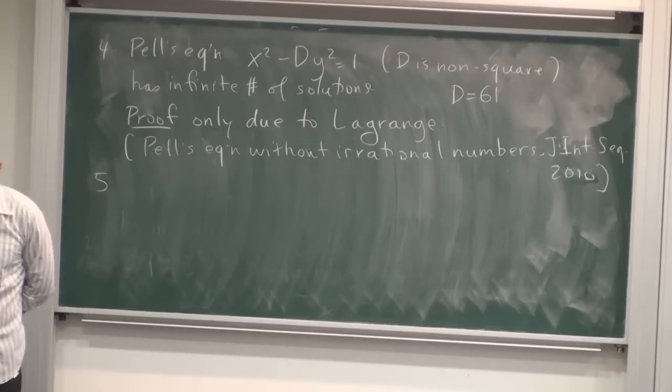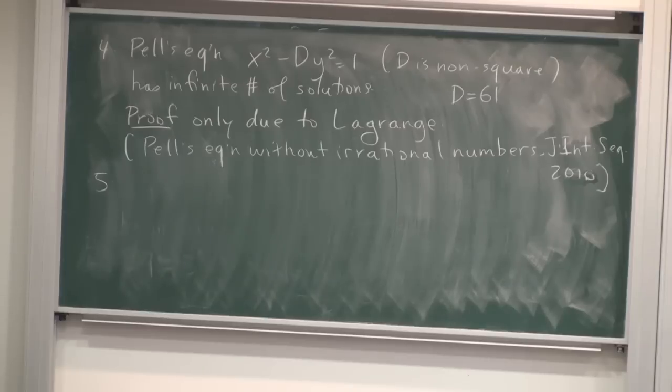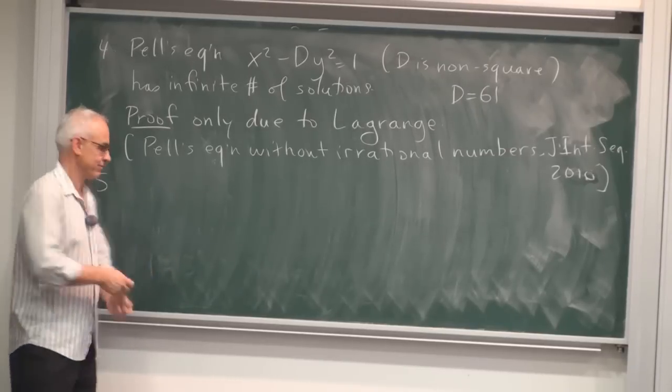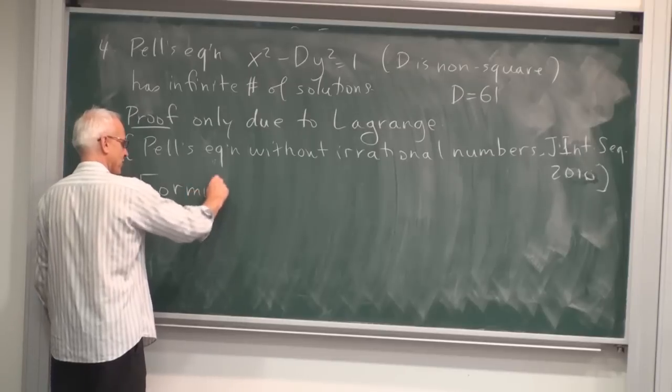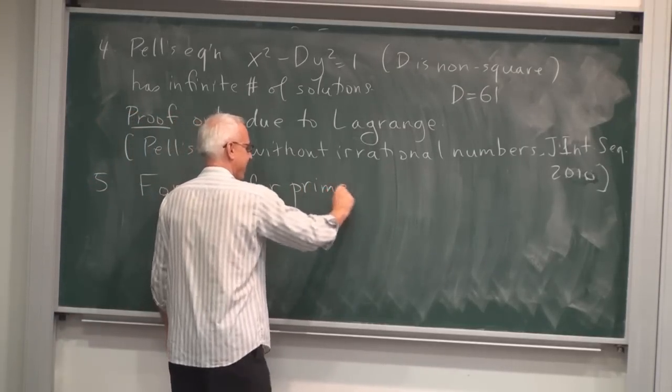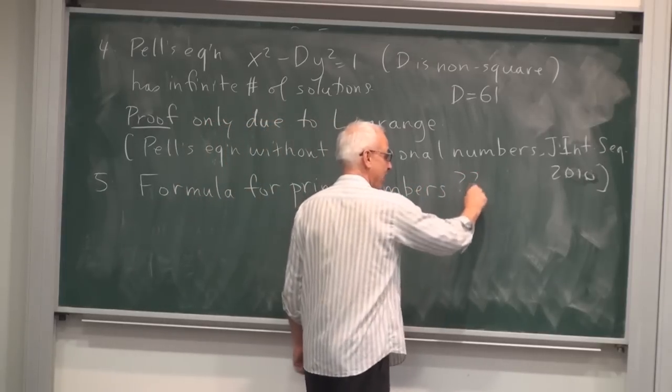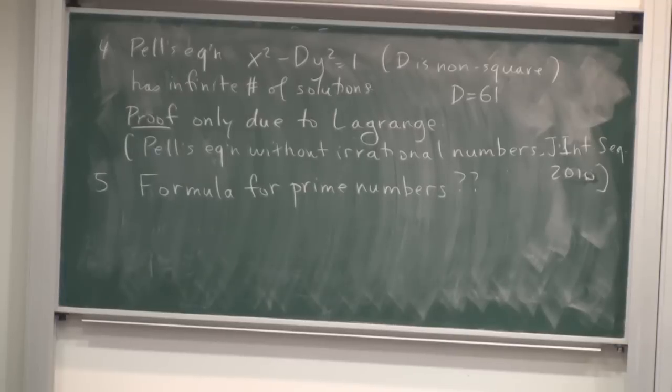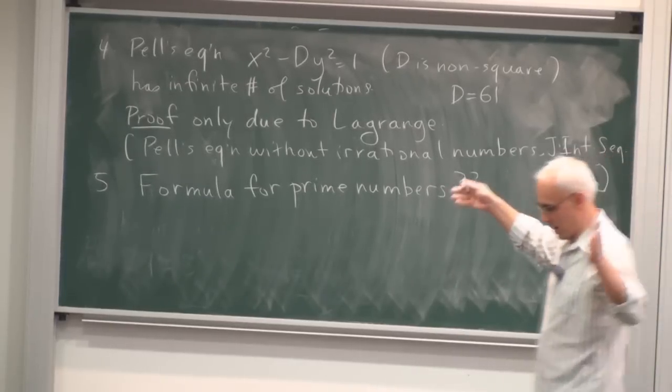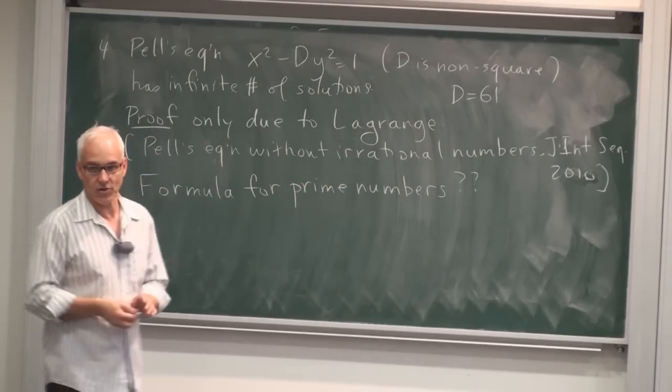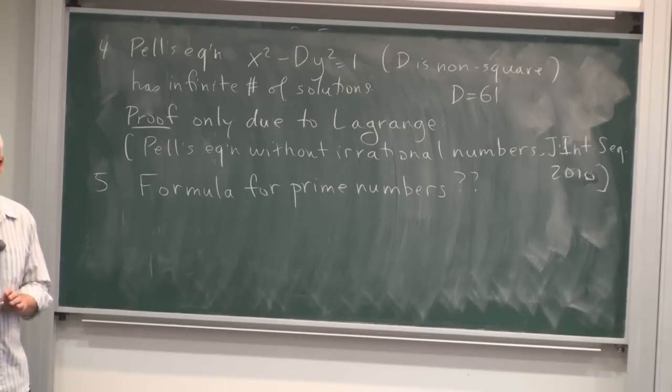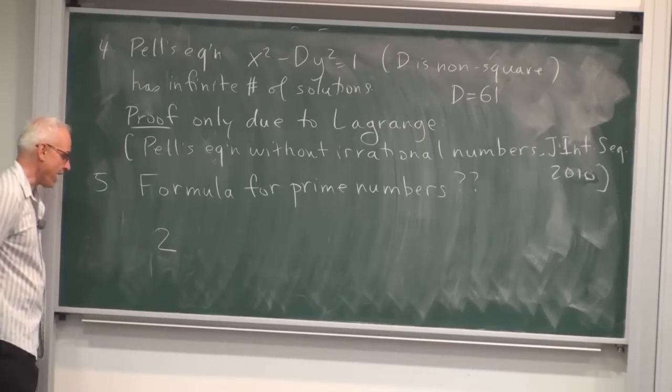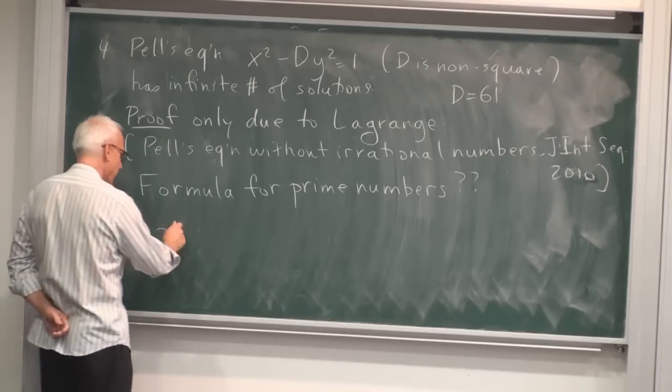So he made this claim that there was an infinite number of solutions. But in fact, the proof of that had to await for Lagrange. Proof only due more than 100 years later to Lagrange. This is a subject that has interested me on occasion. And I've written a little paper called Pell's Equation Without Irrational Numbers, which appeared in the Journal of Integer Sequences just in 2010. And in this paper, I give what I think is probably the simplest proof of this fact, that there's an infinite number of solutions to Pell's Equation. So it's a very elementary proof that you can have a look at. It just requires some first-year understanding of linear algebra. You can find it on the internet if you like.